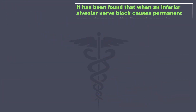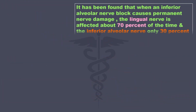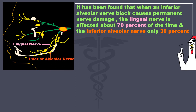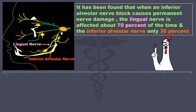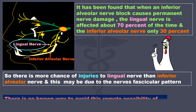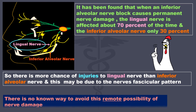It has been found that when an inferior alveolar nerve block causes permanent nerve damage, the lingual nerve is affected about 70 percent of the time, and the inferior alveolar nerve only about 30 percent. So there is more chance of injury to the lingual nerve than the inferior alveolar nerve, and this may be due to the nerve's fascicular pattern. There is of course no way to avoid this remote possibility of nerve damage.